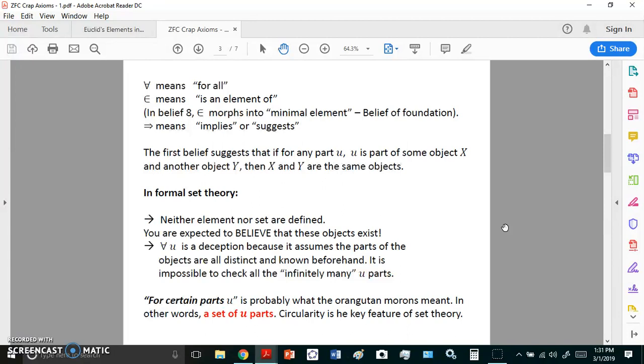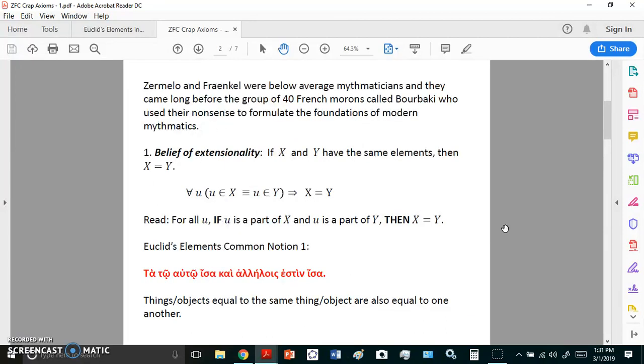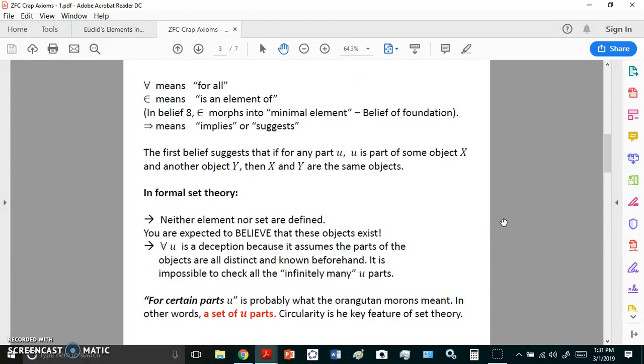For all u is a deception because it assumes the parts of the objects are all distinct and known beforehand. It is impossible to check all the infinitely many u parts. Somebody might say the axiom of infinity or the belief of infinity is not needed in ZFC. It is. It's needed from the very first errant belief, the belief that we have extensionality.